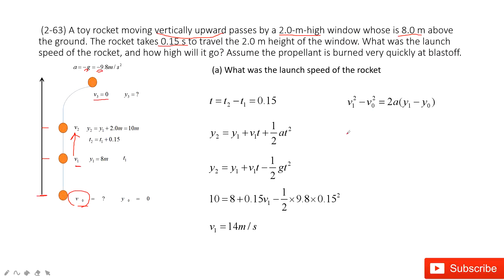We input the known quantities. We find y0 is 0, so we just drop it. The acceleration is negative g. We can solve: v0 squared equals v1 squared plus 2g times y1. We get 19 meters per second.